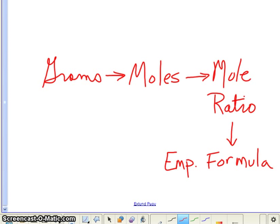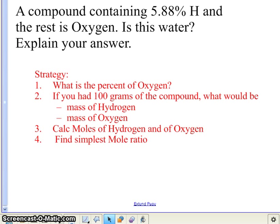Now, in the next problem that we're going to do, we're going to actually add a step. And the new step that we're going to add precedes the grams. But then, the rest of the process is the same. We're going to start with the percent by mass of each element in the compound. And then, we're going to go to grams. And after we go to grams, we'll go to moles, mole ratio, and the empirical formula. Same process. Now, we're adding one more step.